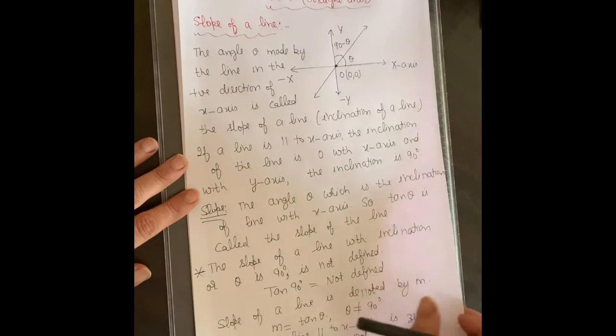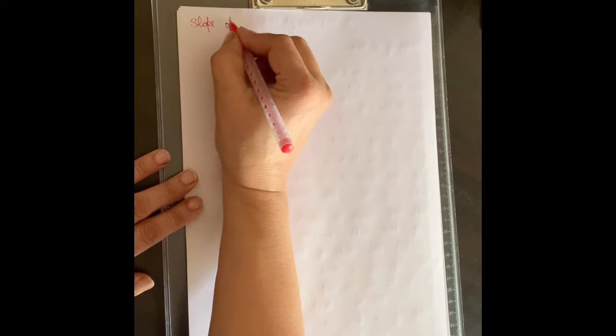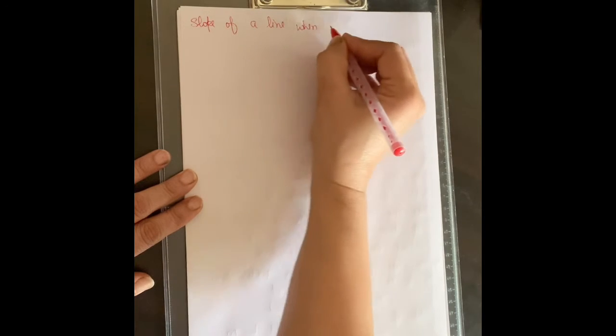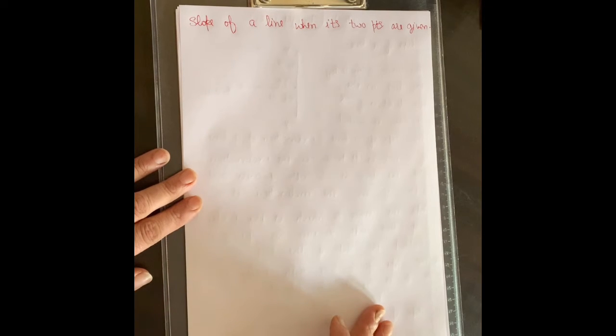Now we have found slope using angle. There is another method to find slope — we can find slope in many ways. Now I am writing: slope of a line when its two points are given. When you want to find the slope of a line and two points or two coordinates are given, how will we define this slope?